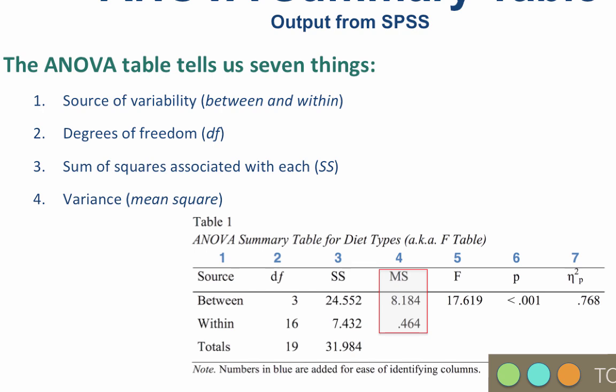Column four is variance, also called the mean square. So mean square, think of average of the squares. The mean square is the sum of squares divided by the degrees of freedom for each row. You only need the mean square for the first two rows, between and within.